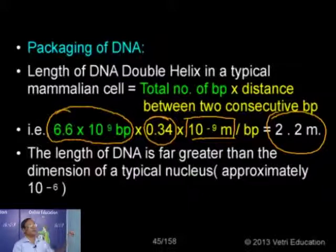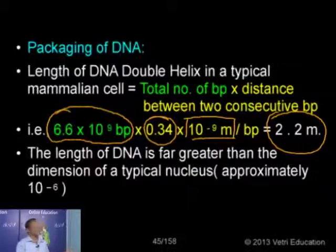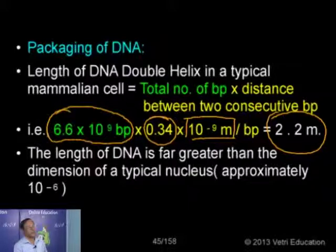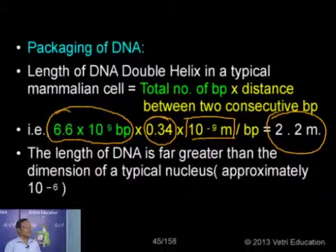You can also calculate the number of base pairs if the length is given. For example, the length of E. coli DNA is about 1.36 millimeters. Using the formula: length = number of base pairs × distance between successive base pairs, rearranging gives number of base pairs = length divided by distance. So 1.36 × 10⁶ divided by 0.34 equals 4 × 10⁶ — that is the number of base pairs in E. coli.